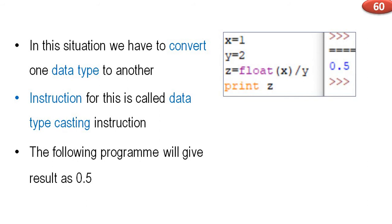To fix this, we write: x = 1 (integer), y = 2 (integer), then z = float(x) / y. We convert the integer x to float, then divide by y, and now z will get the floating point value. So print z will give us 0.5. This is the data typecasting instruction.